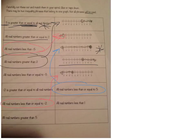Let's go down to this next statement: 'All real numbers less than or equal to negative five.' I have one up here — that's a negative five — but it's a less than and not an 'or equal to,' so this does not match with that number line. We're not going to use that one.